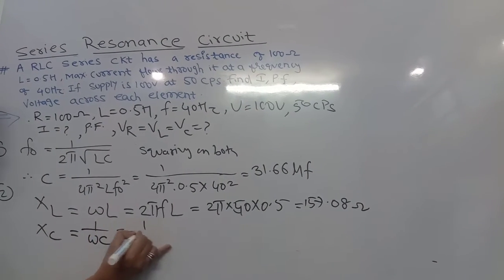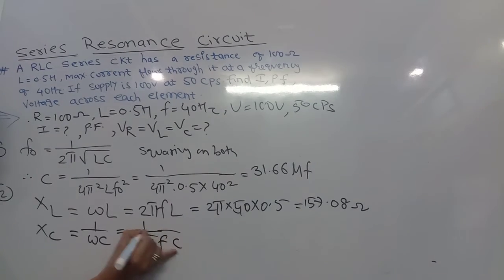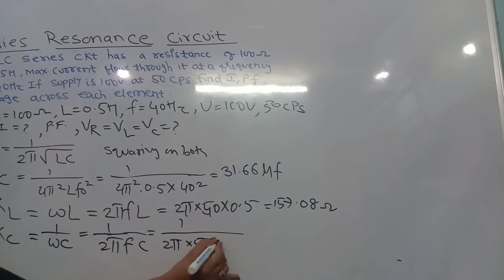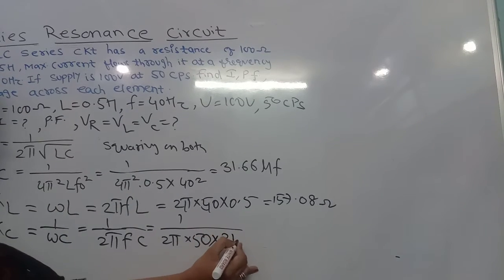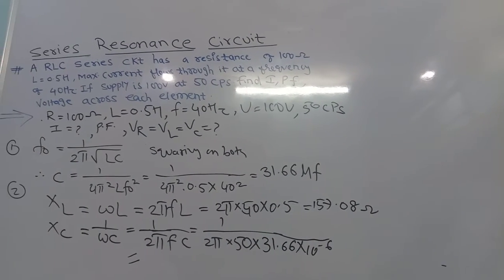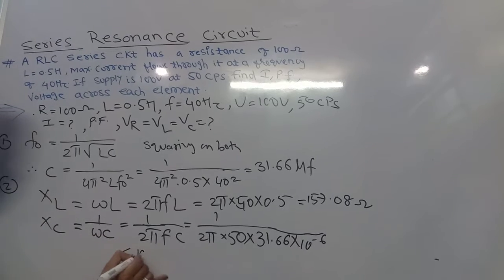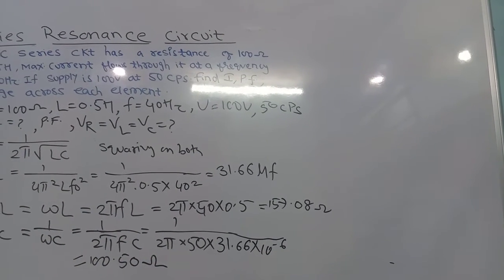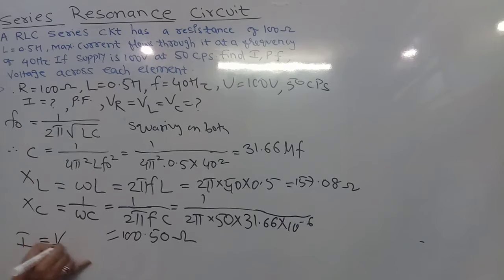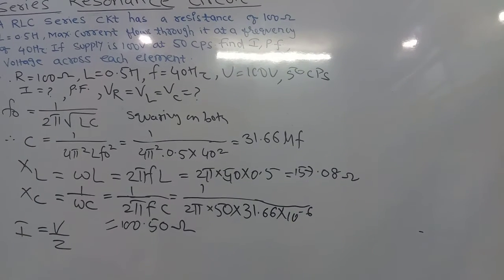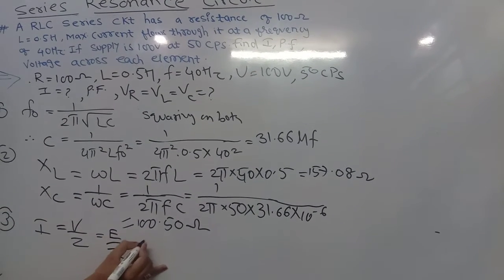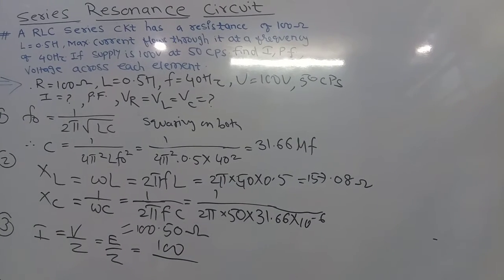The capacitive reactance XC = 1/(ωC) = 1/(2πfC). Using f = 50 and C = 31.66 microfarad (31.66 × 10⁻⁶): XC = 100.50 ohm. Now for the current, by Ohm's law I = V/Z, where Z is the total impedance of the RLC series circuit.